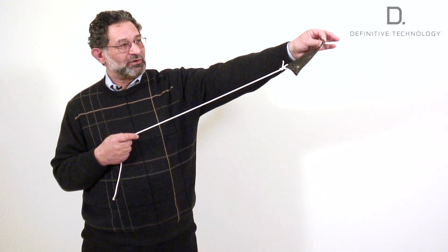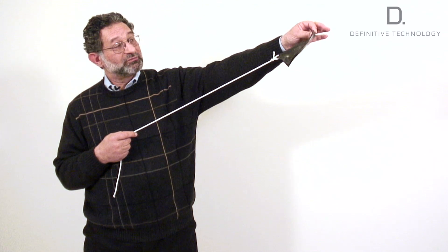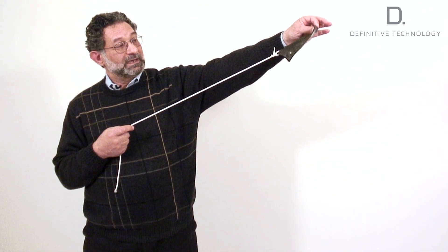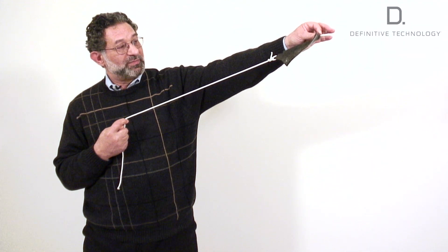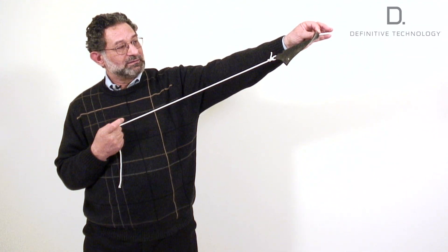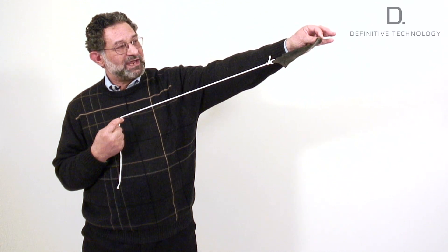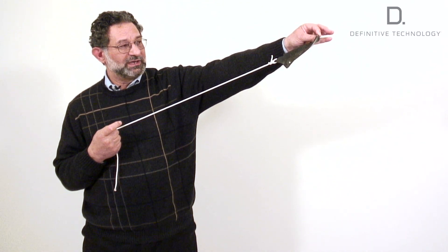Now let's put a piece of soft rubber at the end of the rope, and this represents a surround in a real loudspeaker, and let's put that transient energy back in. Oh, and look at that. Way less resonance, because the rubber is actually absorbing the resonance when it gets down there.